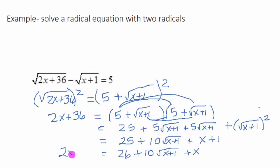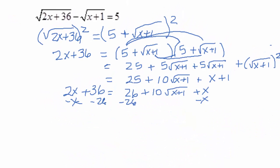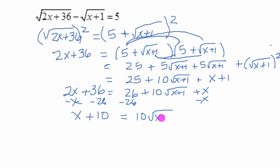On the left side we still have 2x plus 36. As you can see, we still have a radical expression here on the right-hand side. So we are going to isolate again — we need to move over the x term and the 26 by subtracting. So we'll subtract those terms over to the left side. Over here we now have x plus 10, and over here we have our 10 square root of x plus 1.